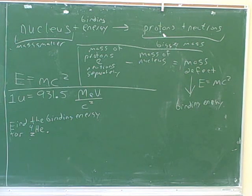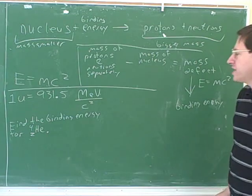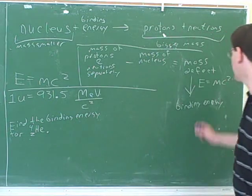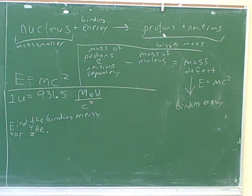Can I just do E equals mc squared? We can do that once we know what the mass defect is. So the first step is to figure out the mass defect. Even though the question is asking you for the binding energy, our flow chart says that first we'll need the mass defect. For the equation, it's mass of protons and neutrons separately. So it would be 4 minus the mass of the nucleus.